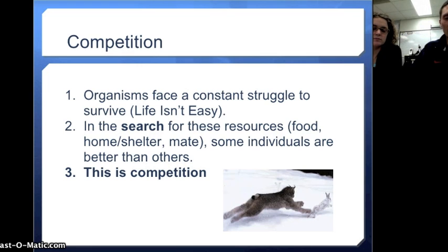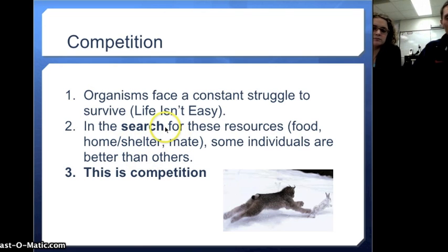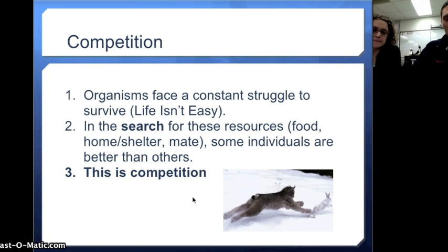Building off the idea of overproduction of offspring, we have competition. If there are too many individuals in the population and environment, there's probably not enough food, shelter, or mates for them all to survive. This rabbit is probably going to be eaten by this bobcat. There's competition for food, shelter, and mates, and this competition is what drives natural selection.